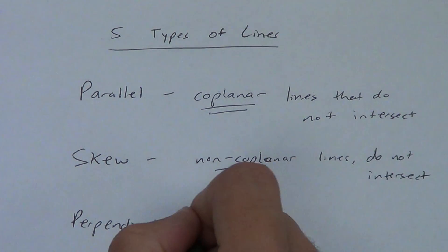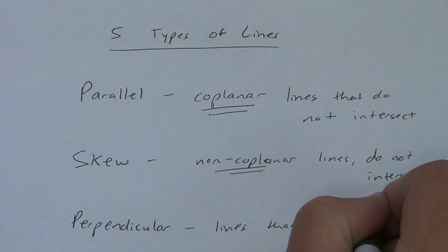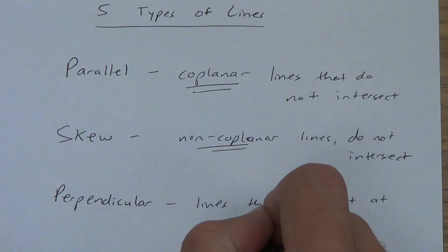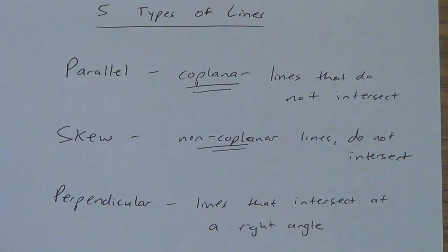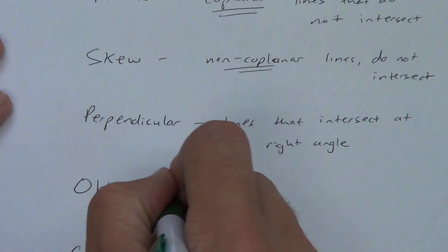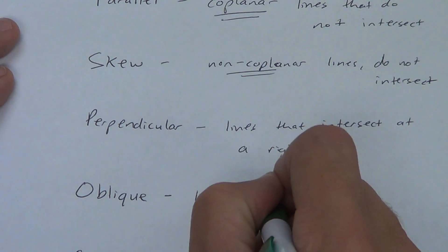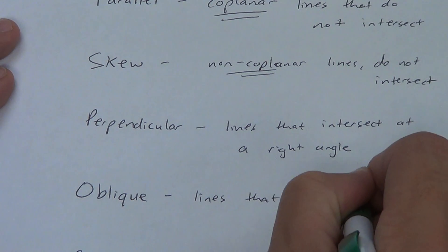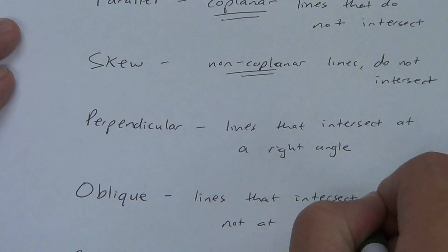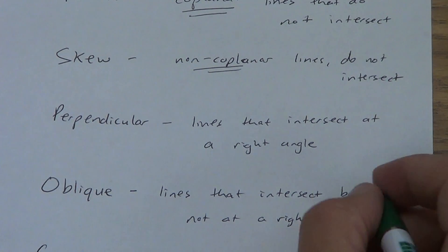Perpendicular lines we talked about before — these are lines that intersect. And hopefully you remember they intersect at a right angle. Now, a new term here: oblique. This is lines that intersect, but not at a right angle. Lines that intersect but not at a right angle. This is what we usually think of when we deal with vertical angles.